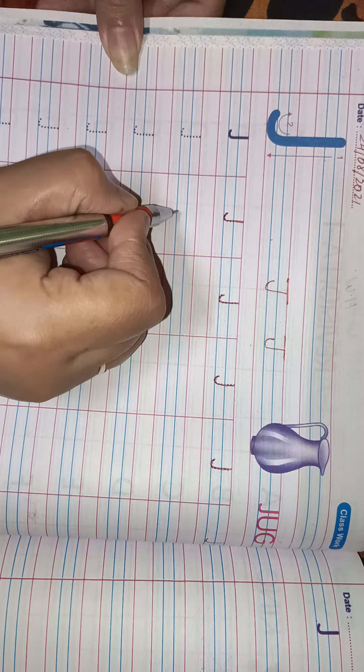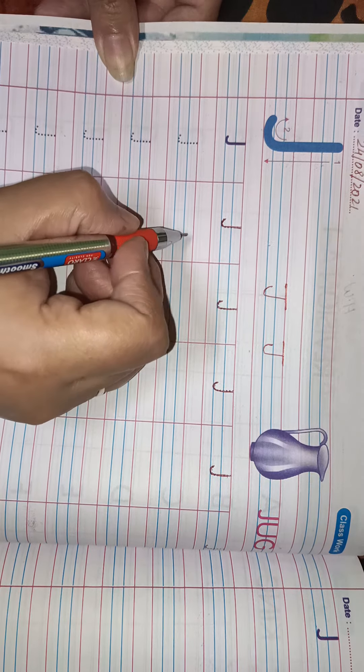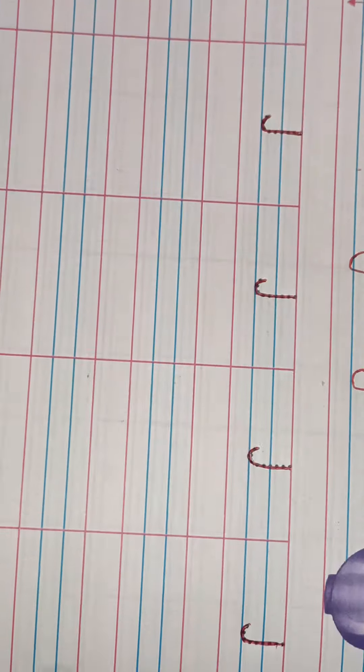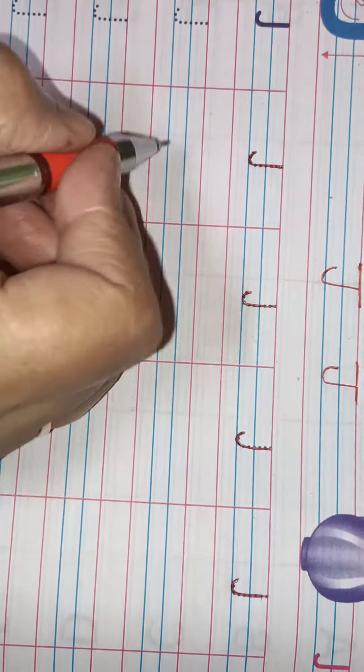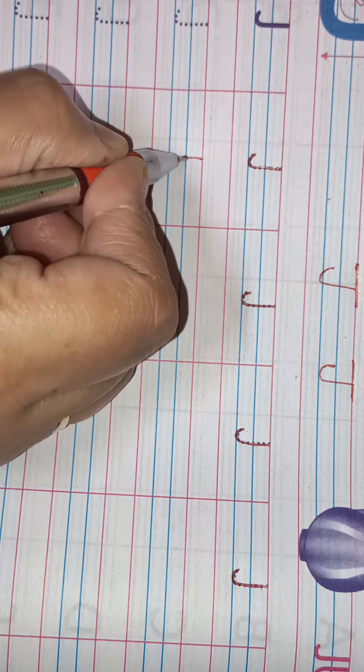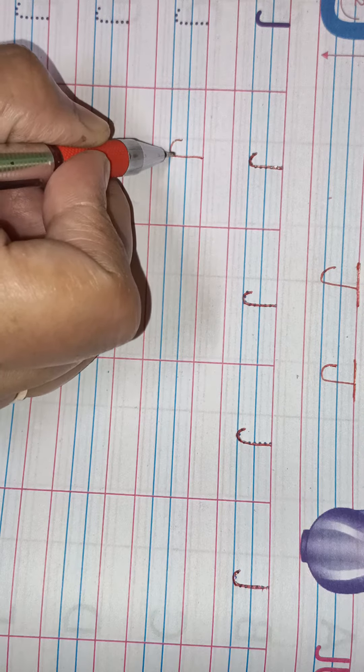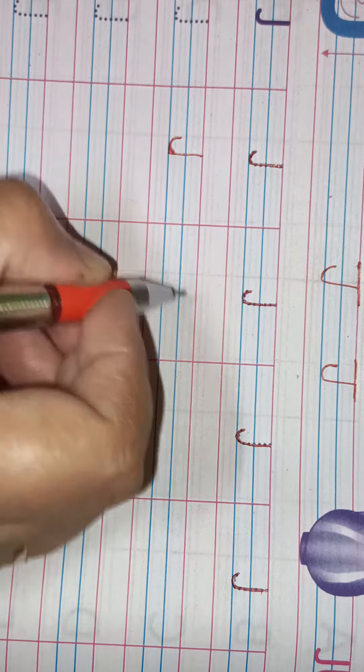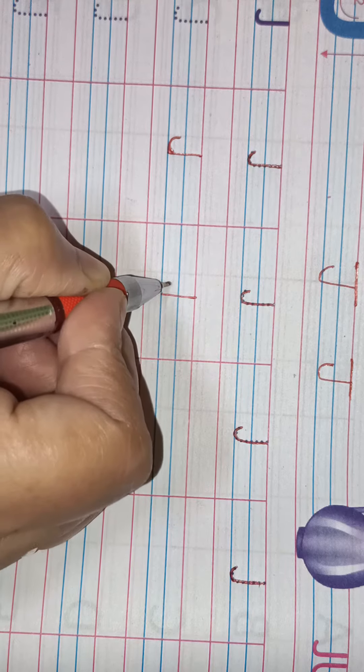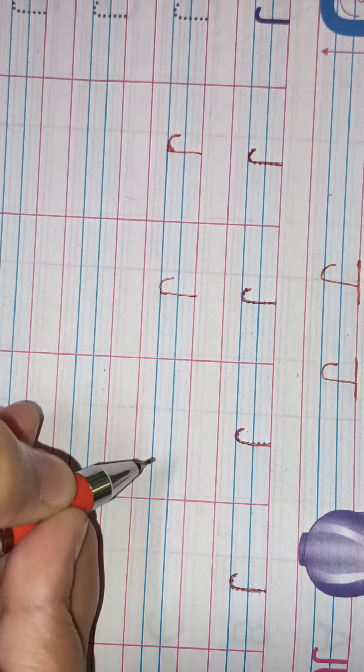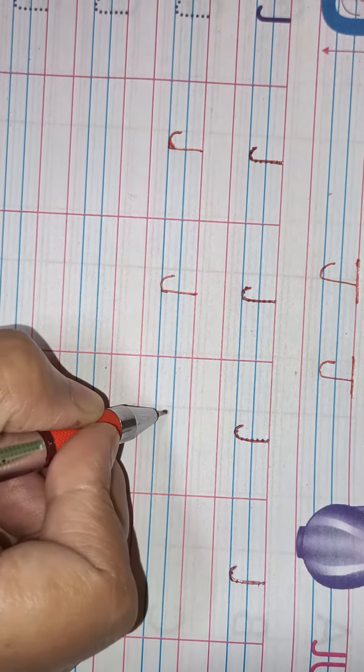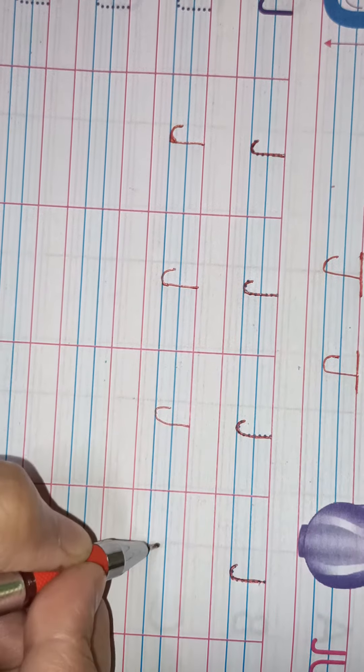Blue line se red line tak. Thik hai, aap ek simple si trick is mein ye bhi kar sakte hain. Pehle ek seedha one bana lijiye like this. Phir aadha U, aadha sa U bana lijiye. Again, one bana ke aadha U. Jaisa aap ko comfortable lage, ya se U banate huye upar le jaiye.